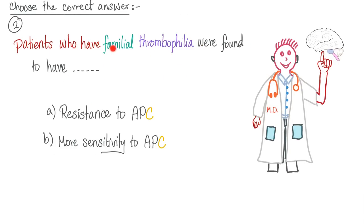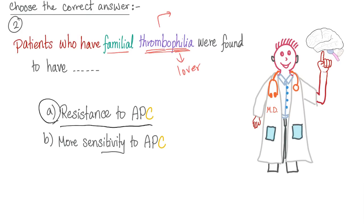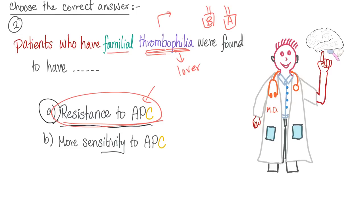Question 2: Patients who have familial thrombophilia were found to have — A, resistance to APC, or B, more sensitivity to APC? The answer is A, resistance to APC. Familial thrombophilia — philia means love — they are lovers of thrombosis; they have lots of thrombosis going on. If you have lots of thrombosis, you are using the accelerator a lot and not the brakes. Probably you have resistance to the brakes — resistance to activated protein C.